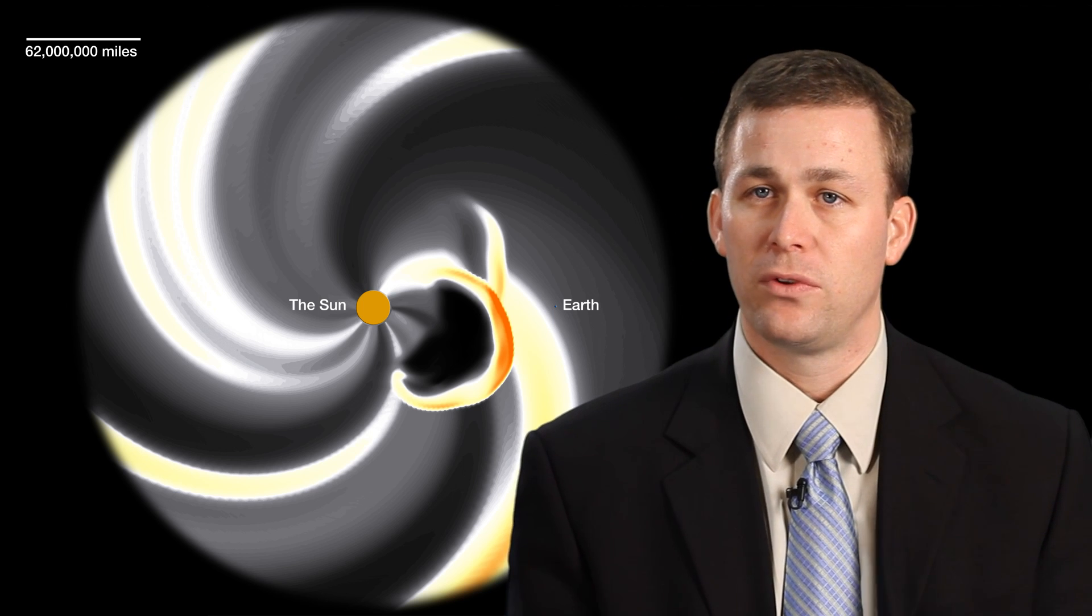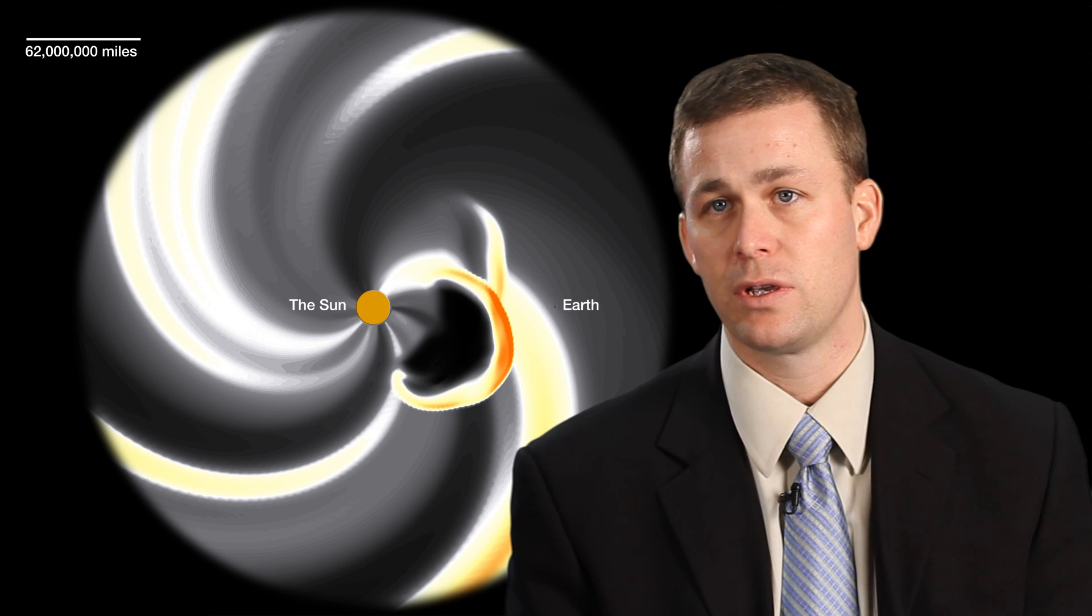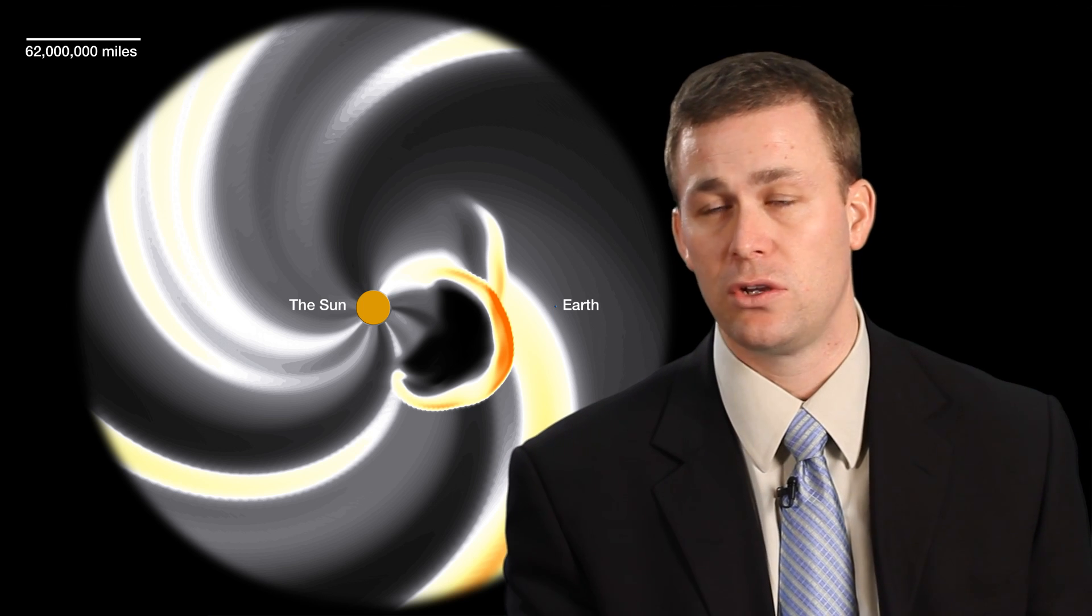Space weather plays out in a number of different timescales. The first piece, the solar flare piece, is really instant. When we're measuring it, our geosynchronous spacecraft detect it, and it's affecting the Earth.